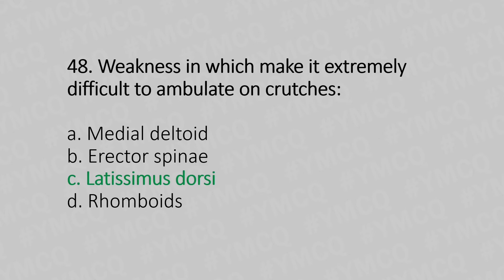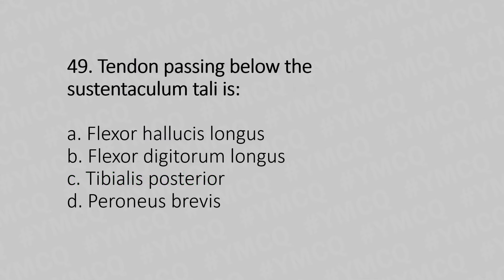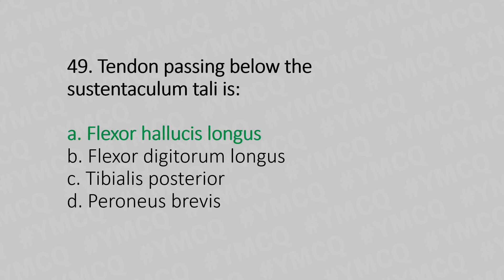Question 49: The tendon passing below the sustentaculum tali is — Option A: flexor hallucis longus. Option B: flexor digitorum longus. Option C: tibialis posterior. Option D: peroneus brevis. The answer is Option A: flexor hallucis longus.